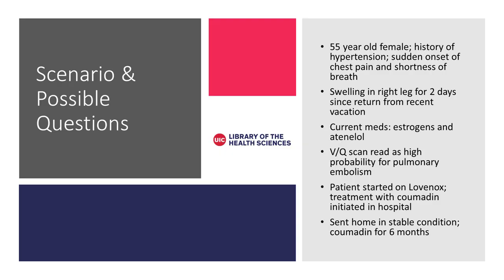Now let's look at a scenario and think of some possible clinical questions. A 55-year-old female with a history of hypertension had sudden onset of chest pain and shortness of breath with swelling in her right leg for two days since she returned from vacation. She is taking estrogens and atenolol. She had a VQ scan at the hospital which read as high probability for pulmonary embolism. She was started on Lovenox and treatment with Coumadin was initiated at the hospital. She was sent home in stable condition and has now been on Coumadin for six months. You might have many different clinical questions related to this patient. Let's look at a few possibilities using the PICO model.